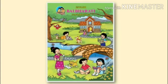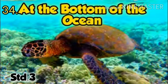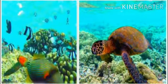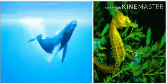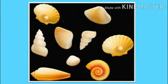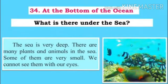Hello and welcome, my dear students. Today we will be learning a new chapter from your English Bhalabarthi textbook, that is chapter number 34: At the Bottom of the Ocean. Have you ever thought what is inside the sea? You will say that there are many types of fish and shells. You are right. Let's start our lesson — lesson number 34: At the Bottom of the Ocean.